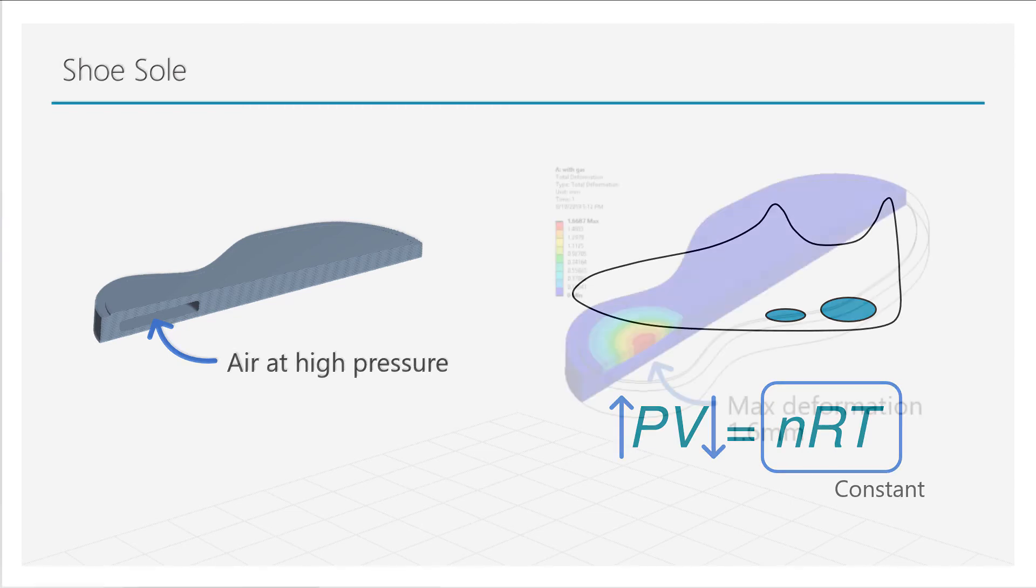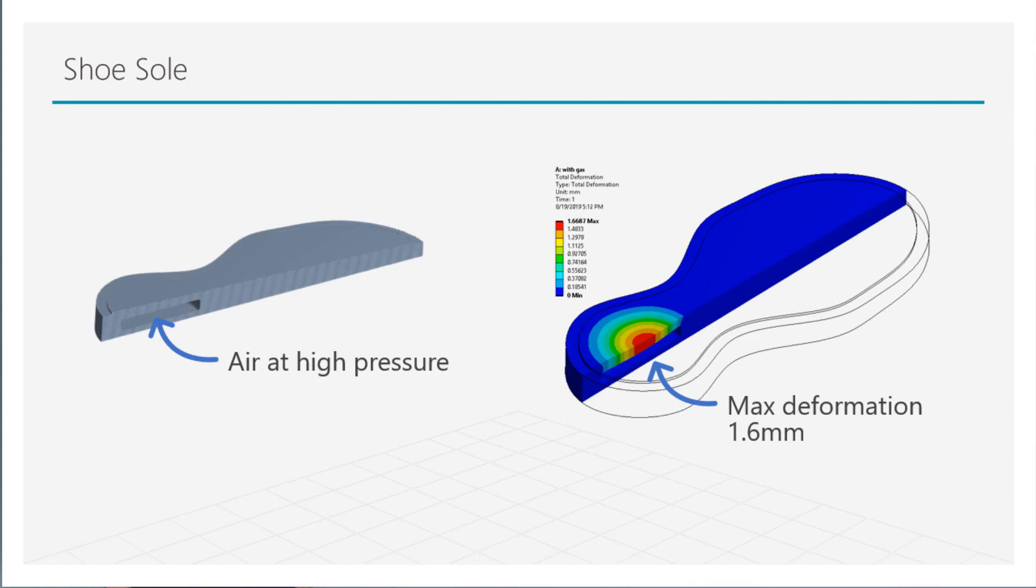Which is what we see in a simulation when we introduce this pressurized air. The deformation is lower for the same applied load and we still have the void.